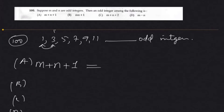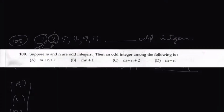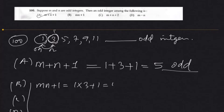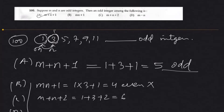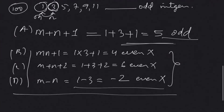Let m equal 1 and n equal 3. Then m plus n plus 1 equals 1 plus 3 plus 1 equals 5, which is odd — so this is the answer immediately. For our satisfaction: m times n plus 1 equals 1 times 3 plus 1 equals 4, which is even. m plus n plus 2 equals 1 plus 3 plus 2 equals 6, which is even. m minus n equals 1 minus 3 equals minus 2, which is also even. So option A (m plus n plus 1) is the odd integer.